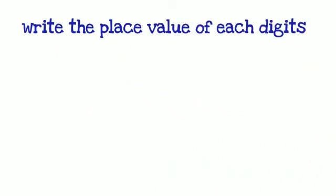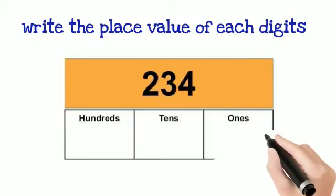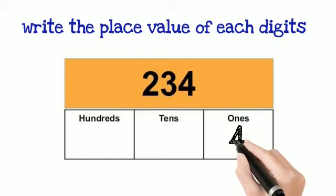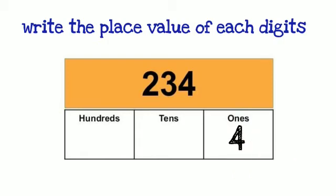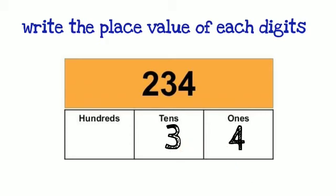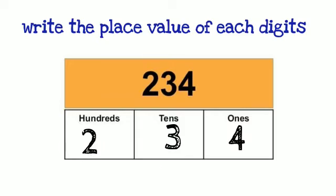Now write the place value of each digit. The number is 234. So 4 — 4 is in the ones place. 3 — 3 is in the tens place. And 2 — 2 is in the hundreds place. 234.